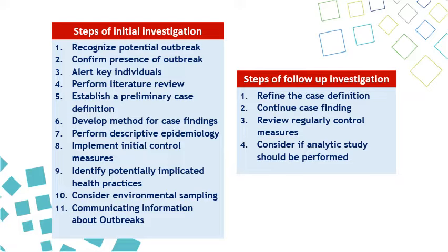The steps of initial investigation: first, recognize potential outbreak; second, confirm presence of outbreak; third, alert key individuals; fourth, perform literature review; fifth, establish a preliminary case definition; sixth, develop a method for case findings; seventh, perform descriptive epidemiology; eighth, implement initial control measures; ninth, identify potentially implicated health practices; tenth, consider environmental sampling; eleventh, communicating information about an outbreak.